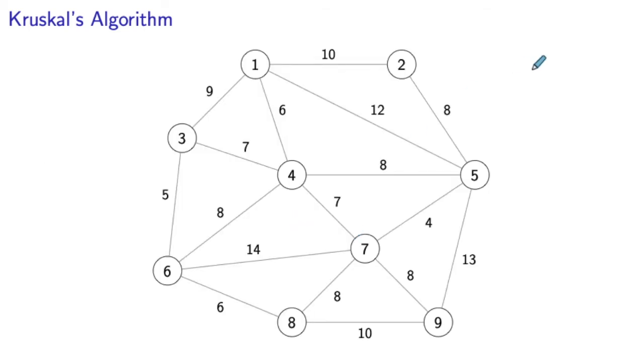All right, so let's illustrate this algorithm using our working graph. So now we assume that all the edges are removed and we only have the nodes. So every node is a tree in our forest consisting of nine trees.